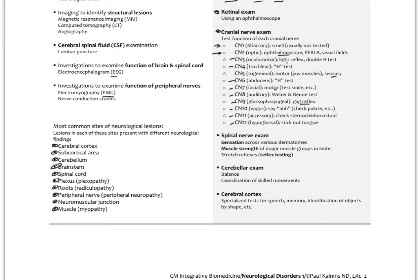We then check the spinal nerves — both sensory and motor. For sensory, we check sensation in different dermatomes, using a combination of sharp and dull stimuli. The patient closes their eyes while you alternate the probe and ask what they're feeling at different dermatomes. For motor, we check the major muscle groups for strength, graded zero to five — five being normal strength and zero being no strength.